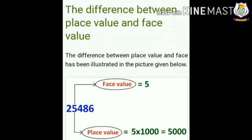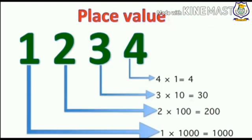In the number 25486, we have to find the place value and face value of digit 5. The face value of 5 is 5, and the place value of 5 is 5000. As you can see, the place values of 1234 are described here. The place value of 4 is 4 — not 4000, not 400, not 40. It's just 4.